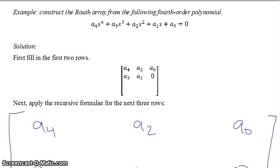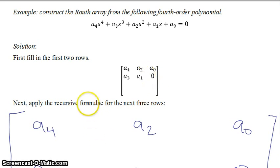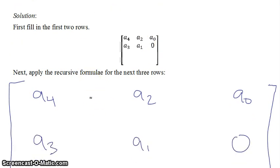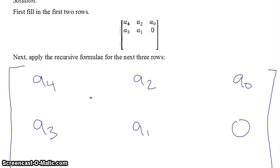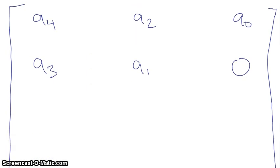The first thing we'll do is fill in the first two rows: a4, a3, a2, a1, a0. Since we ran out of coefficients, this last term is a zero. I've gone ahead and started to draw a big version of the matrix and filled in the first two rows.